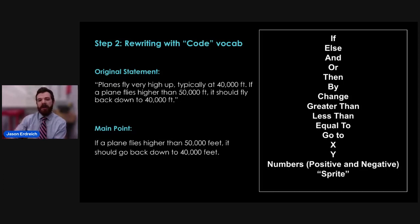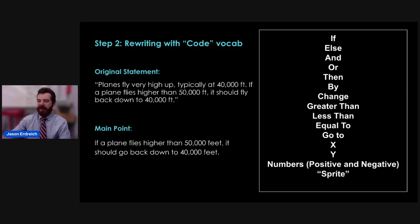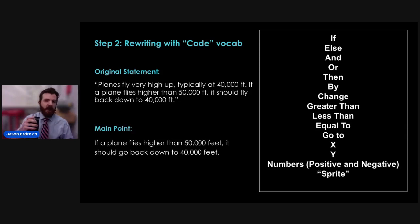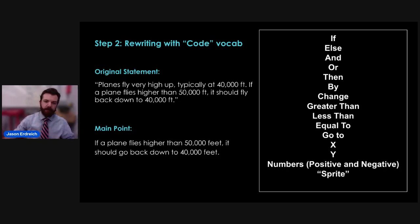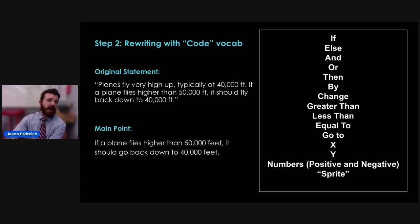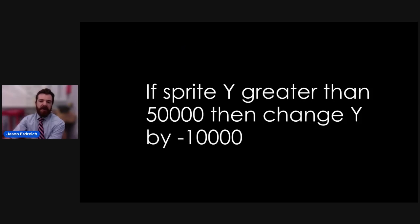I challenge students to rewrite their main point using words that the computer knows. I give them a moment to think about how to rewrite 'if a plane flies higher than 50,000 feet, it should go back down to 40,000 feet' using just the words in the word bank. My answer is: 'if sprite y greater than 50,000, then change y by negative 10,000.' 'Sprite' describes a character or object — I'm calling the plane a sprite. 'Y' is the vertical axis on an xy-coordinate grid. If the plane's y position is greater than 50,000, we subtract 10,000. There's a little bit of math.